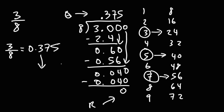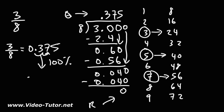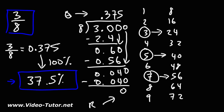To convert the decimal to a percentage, multiply by 100%, which is equivalent to moving the decimal two units to the right. So that's going to be 37.5%. So the value of 3 over 8 as a fraction converted to a percentage is 37.5%.